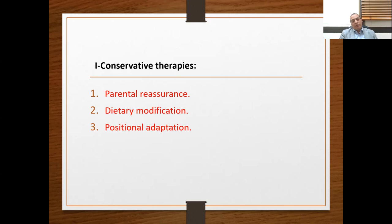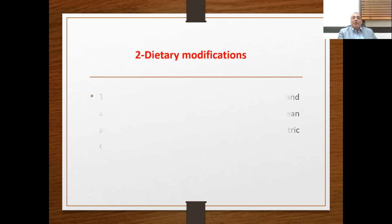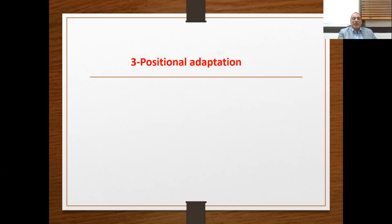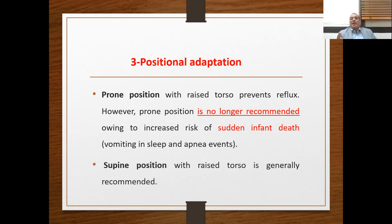There are three items for conservative management: parental reassurance, dietary modification, and positional adaptation. Parental reassurance involves showing sympathy for impaired infant quality of life and parent anxiety. Dietary modification includes making formula more thick to reduce regurgitation, approved by both European and North American Societies for Pediatric Gastroenterology. Positional adaptation relates to the effect of gravity. The prone position with raised torso prevents reflux, but is no longer recommended due to sudden infant death risk. Therefore, the supine position with raised torso is now the generally recommended position for GERD treatment.